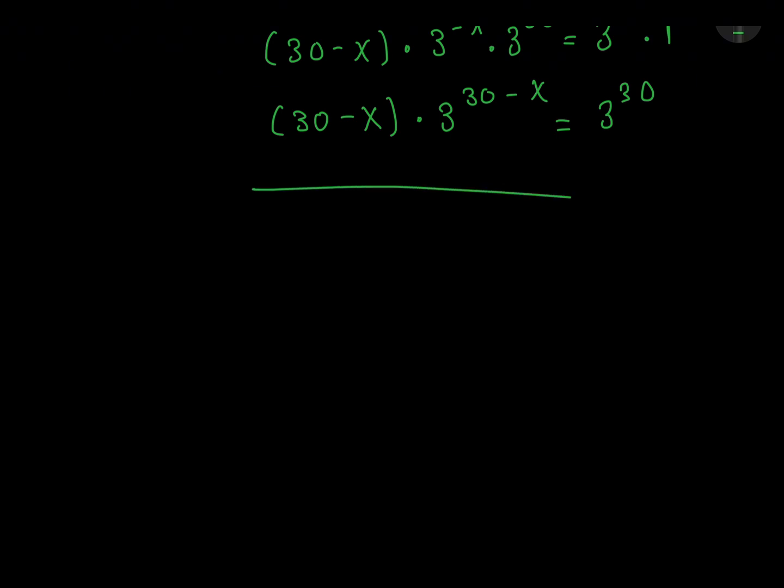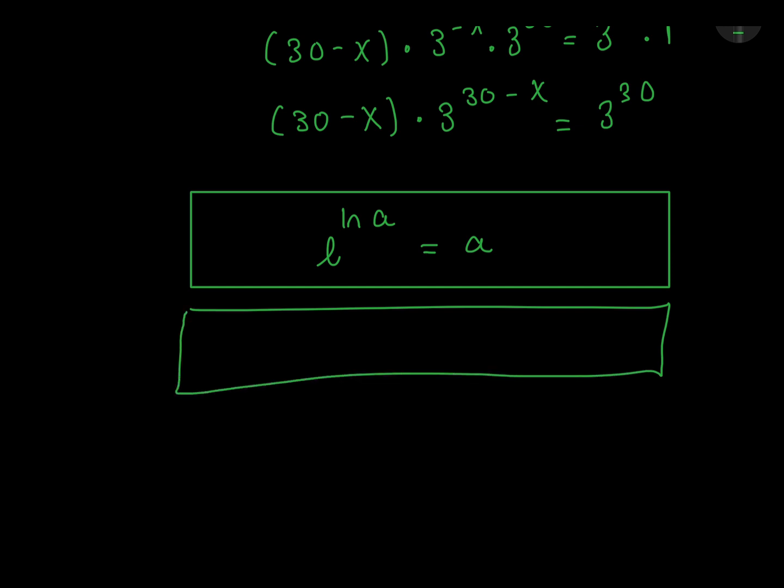Just notice something. If we have e to the power ln a, this is just a. Let's try it using a number. So if we have e to the power ln 3, this is just 3.